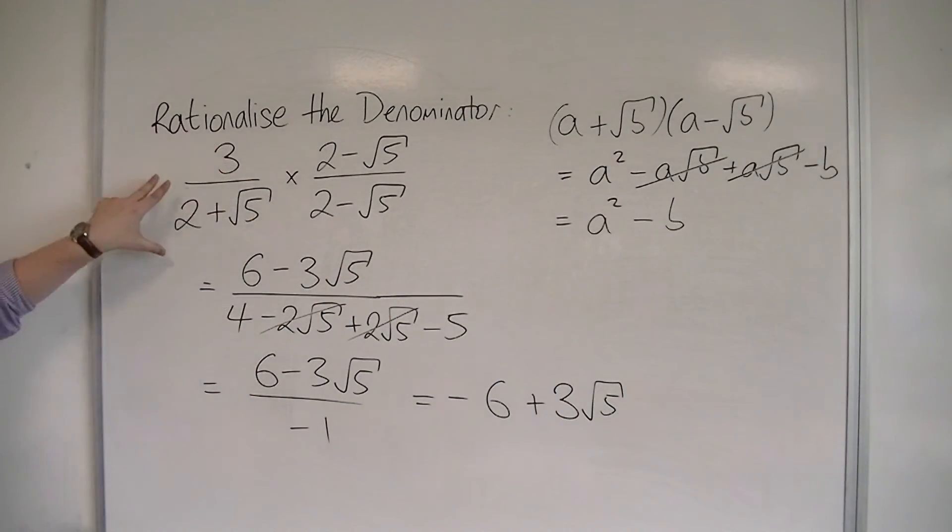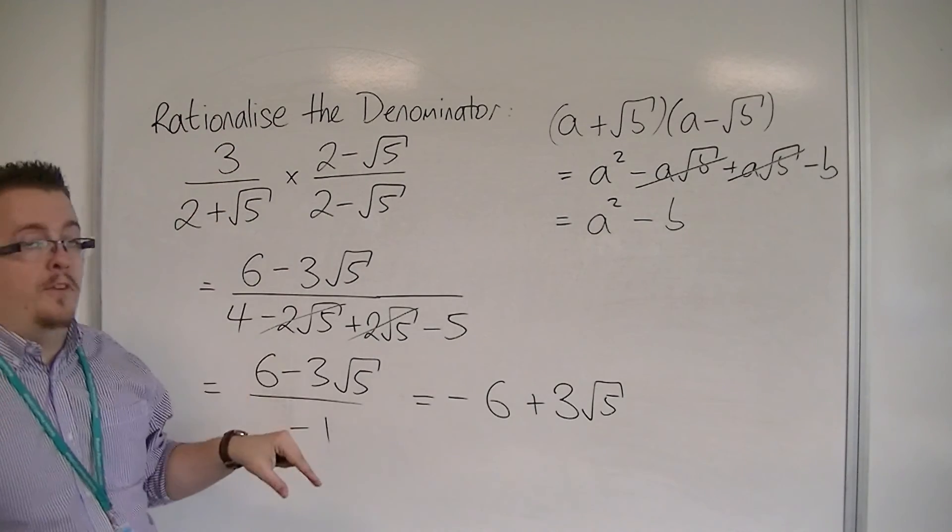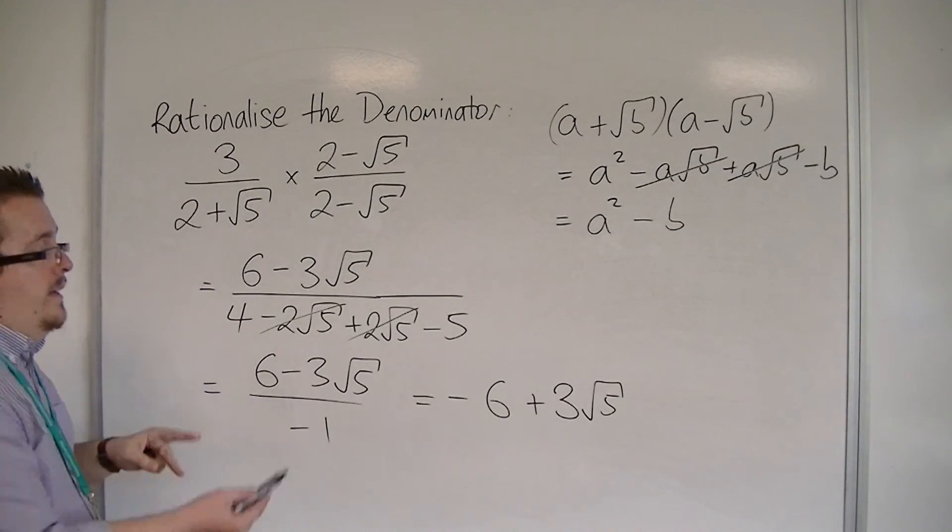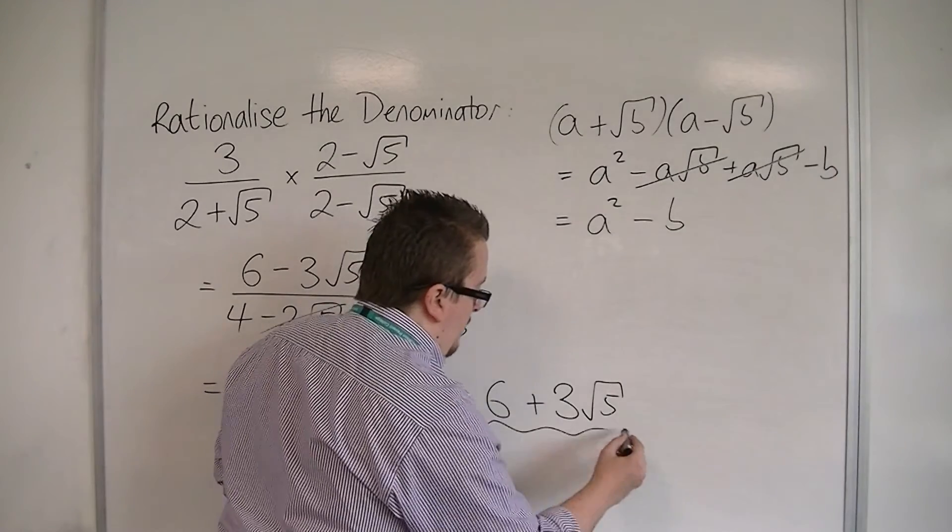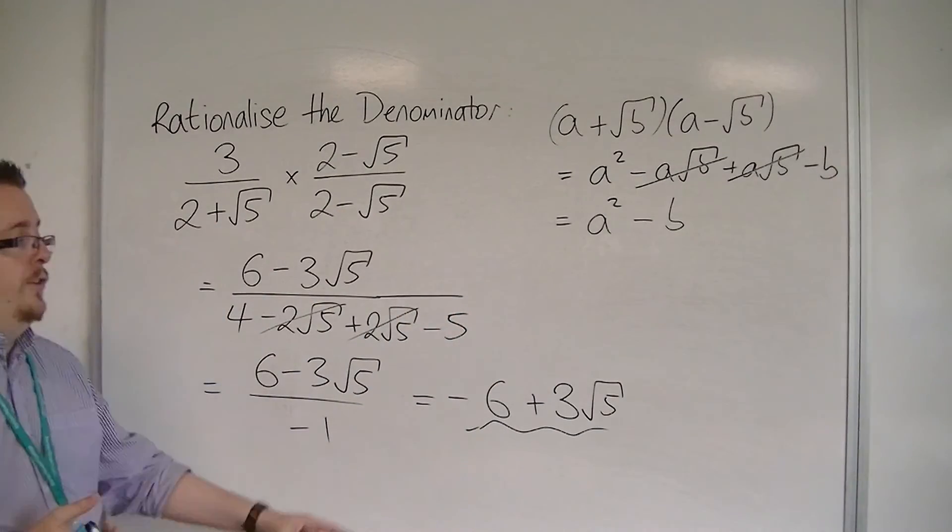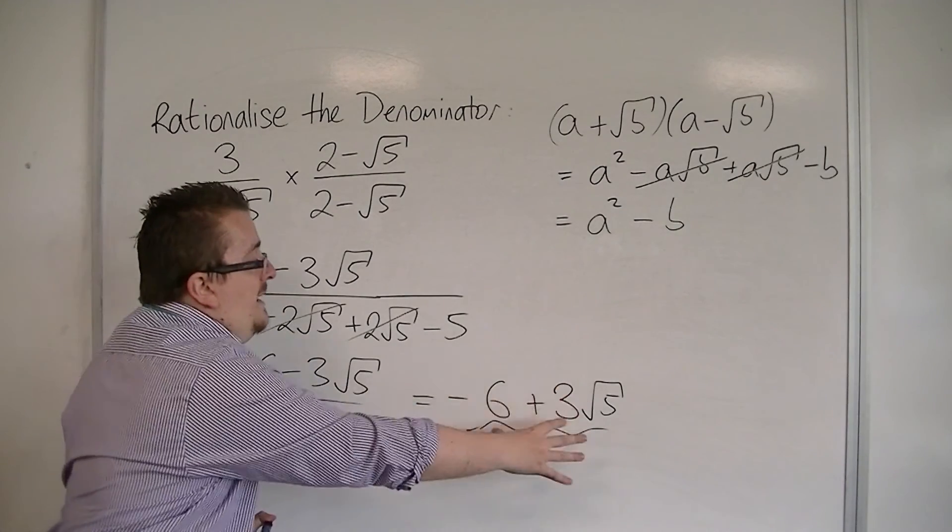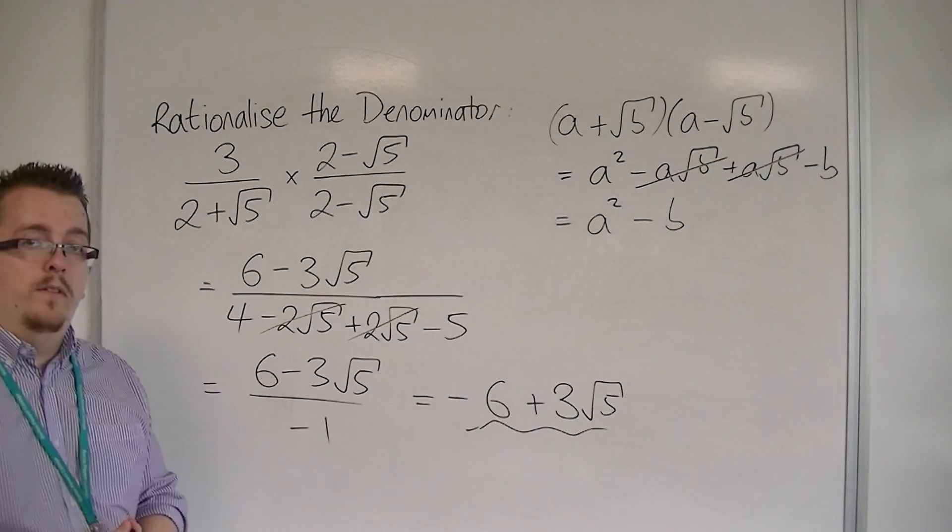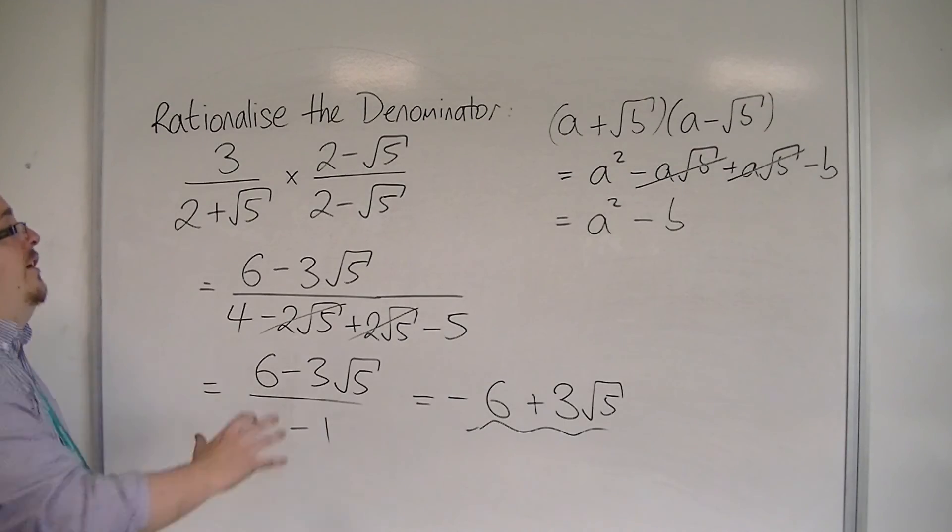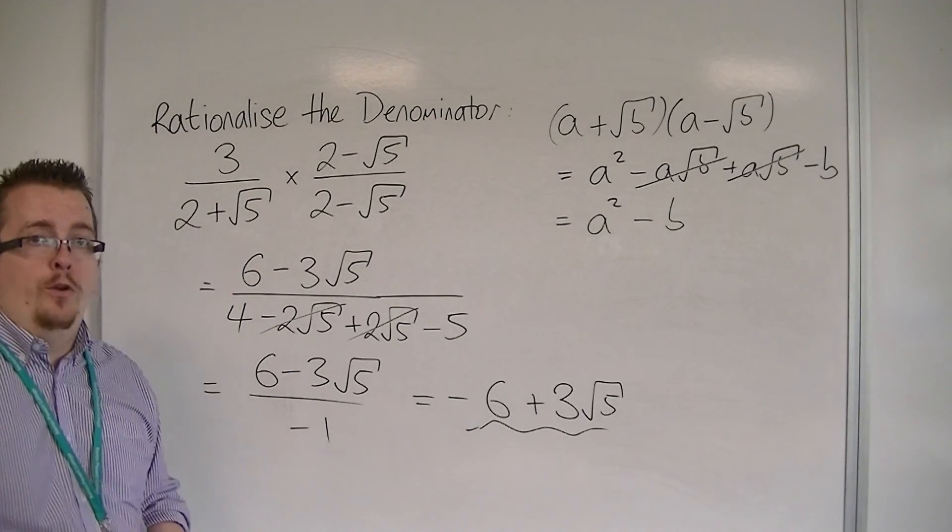And that original fraction that was absolutely horrible to work with can now be more simply worked with by using minus 6 plus 3 root 5. They both have exactly the same value, but this one would be easier to work with than that one. And that's how we're going to rationalize the denominator for examples that look like this.